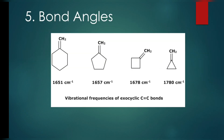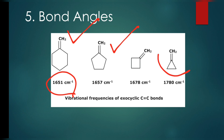The fifth and final factor is bond angles. An increase in bond angle causes an increase in wave number. A smaller bond angle gives a lower wave number, a larger bond angle gives a greater wave number, and an even greater bond angle gives a much greater wave number. These are the five factors that affect the vibrational frequency and wave number in IR spectroscopy.